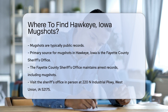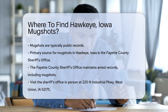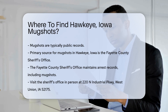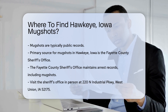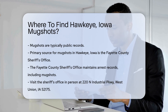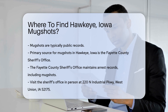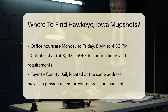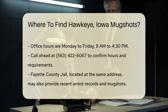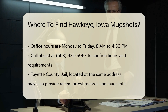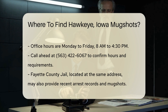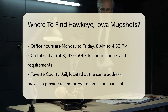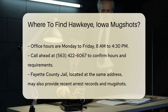To obtain these records, you can visit the sheriff's office in person. The address for the Fayette County Sheriff's Office is 220 N Industrial Parkway, West Union, Iowa 52175. Office hours are usually Monday to Friday, 8 a.m. to 4:30 p.m. It's a good idea to call ahead at 563-422-6067 to confirm hours and any specific requirements.